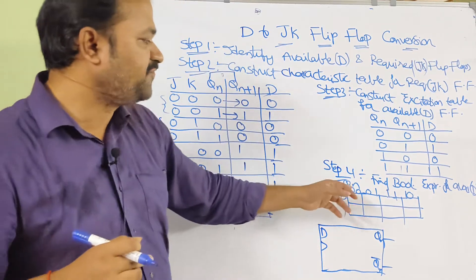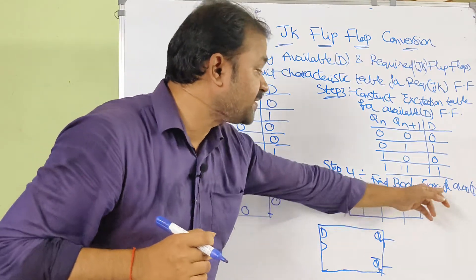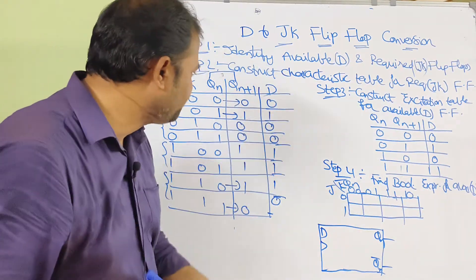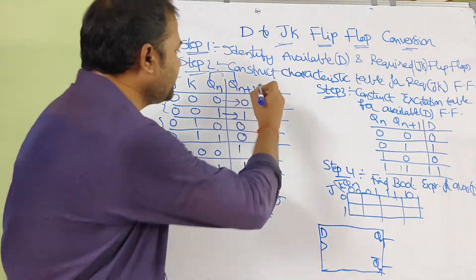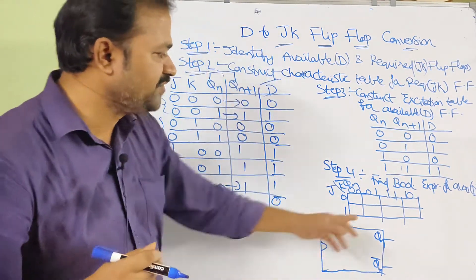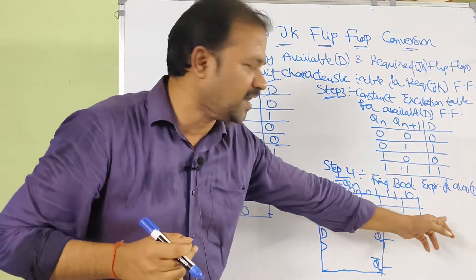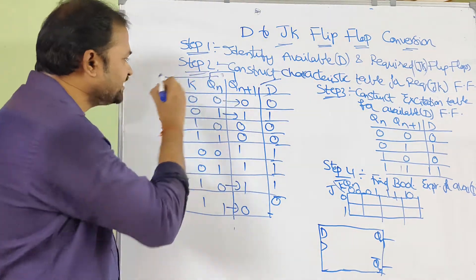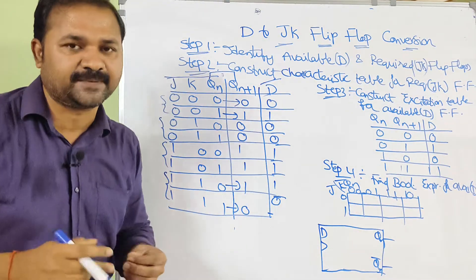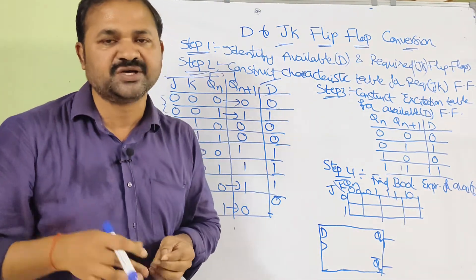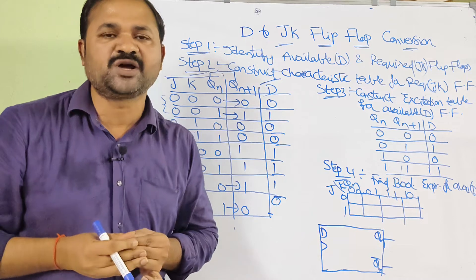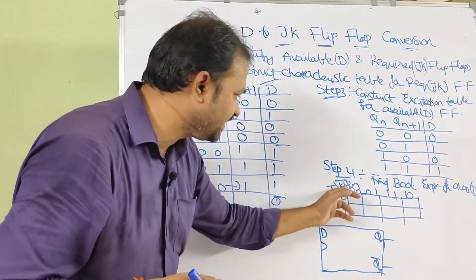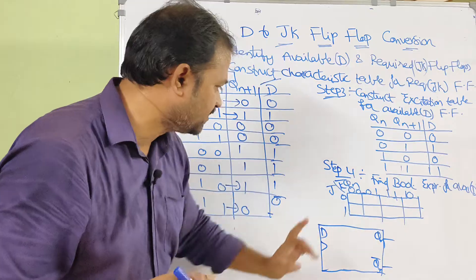Step 4 continued: find the Boolean expression for the D flip-flop. We have the D column, and now we need to obtain the Boolean expression for D based upon inputs J, K, and Qn. Since there are 3 inputs, a 3-variable Karnaugh map is needed. The columns represent J, K, and Qn respectively.